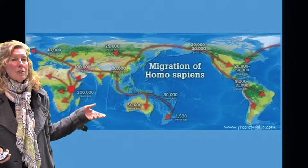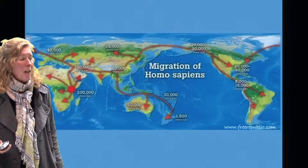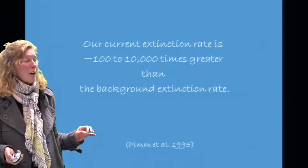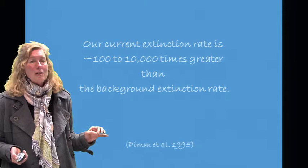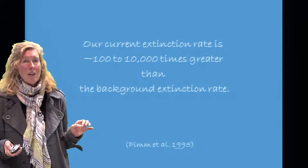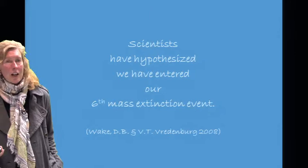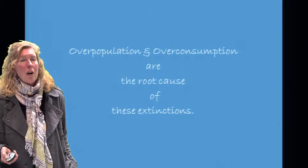Approximately 200,000 years ago, we see the origin of humans in Africa. Humans then began to disperse across the continents, and by about 10,000 years ago, we begin to see many extinctions. Our current extinction rate is approximately 100 to 10,000 times greater than our background extinction rate — that is, the pre-human extinction rate. Scientists have hypothesized that we have entered our sixth mass extinction event, and that this is primarily due to humans.